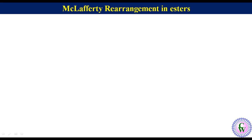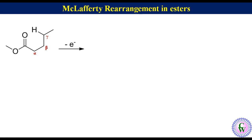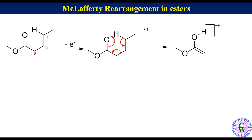McLafferty rearrangement in esters. Let's take the example of methyl pentanoate. It has gamma hydrogen. Removal of one electron will give a radical cation which after McLafferty fragmentation will give the McLafferty fragment and a propene molecule. The m/z value of the McLafferty fragment is 74.